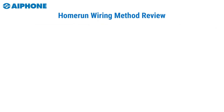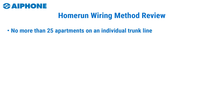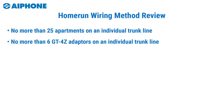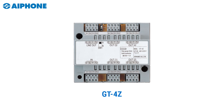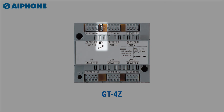To review: you cannot exceed more than 25 apartments or six GT4Z units on one trunk line, and you cannot have more than 48 apartment stations connected to a set of GTBC and VBCs. If you follow these guidelines you should be all set. Once you've added your last GT4Z on a specific trunk line, that GT4Z must be terminated by turning the switch AB to the A position.